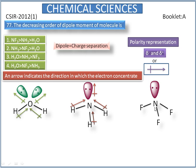In nitrogen trifluoride, fluorine is the electronegative element and nitrogen is the electropositive element. The representation of the dipole moves towards the fluorine atom. In the orbital, the representation of the dipole is opposite to fluorine.